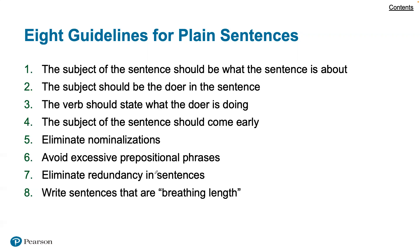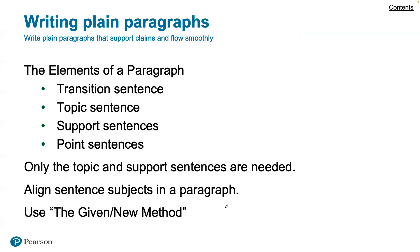Here are the eight guidelines for plain sentences: the subject should come early in the sentence; eliminate nominalizations, which are verbs and adjectives that have been turned into awkward nouns; avoid excessive prepositional phrases; eliminate redundancy in sentences; and write sentences that are breathing length — if something gets too long, break it up into multiple sentences. These are the general guidelines to apply at the sentence level.